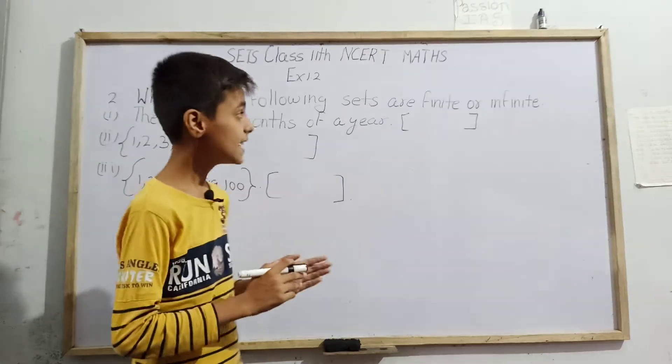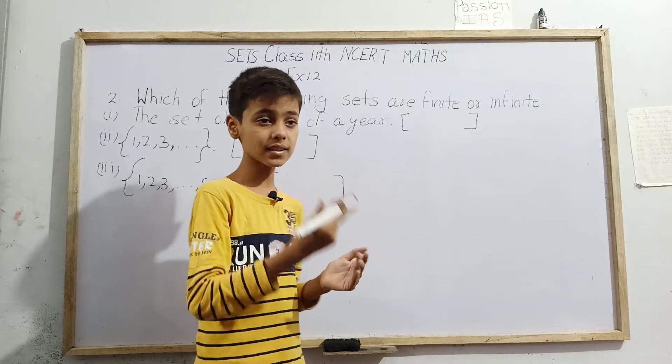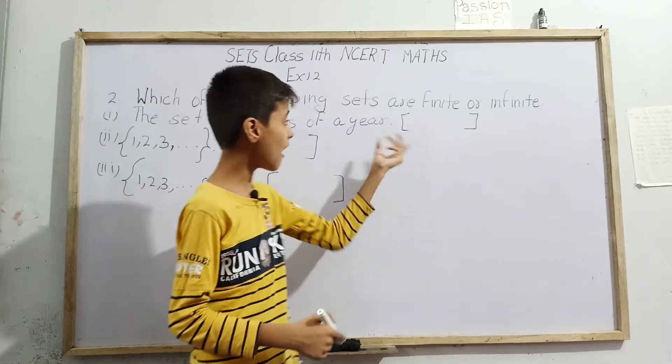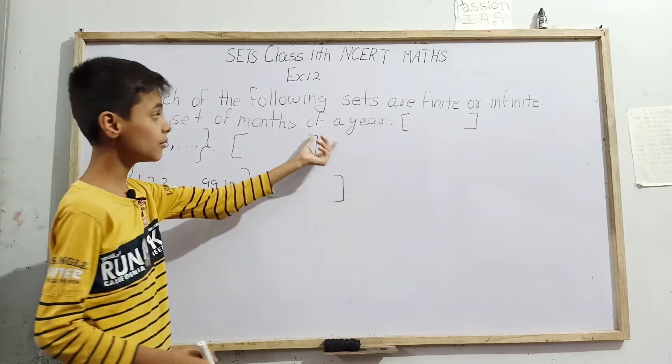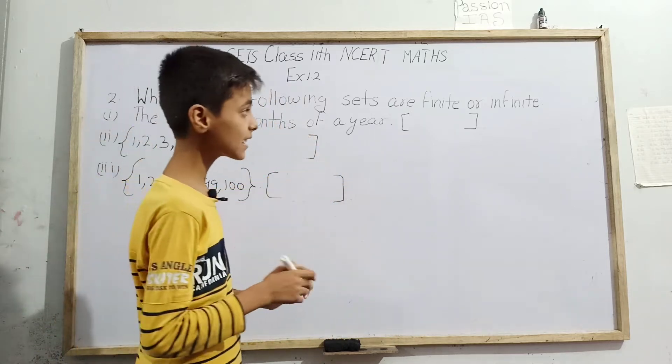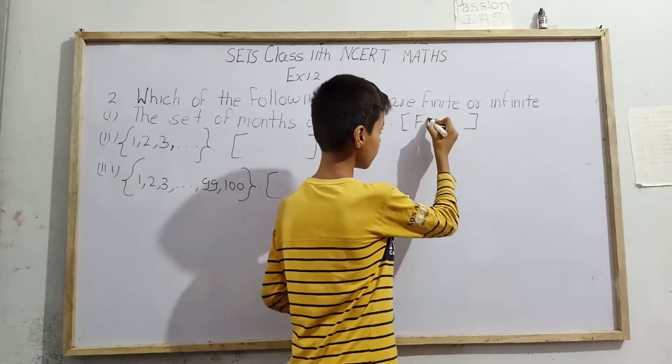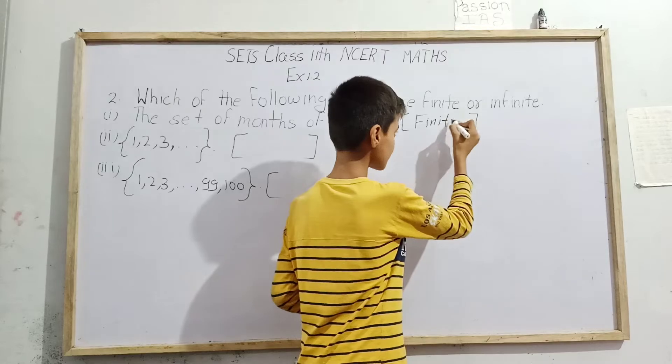Now 12 does not go up to infinity. 12 is not unlimited. It is a very small number. We can easily count that there are 12 months of a year. It can be counted, it is not unlimited, so we can say that this kind of set is a finite set.